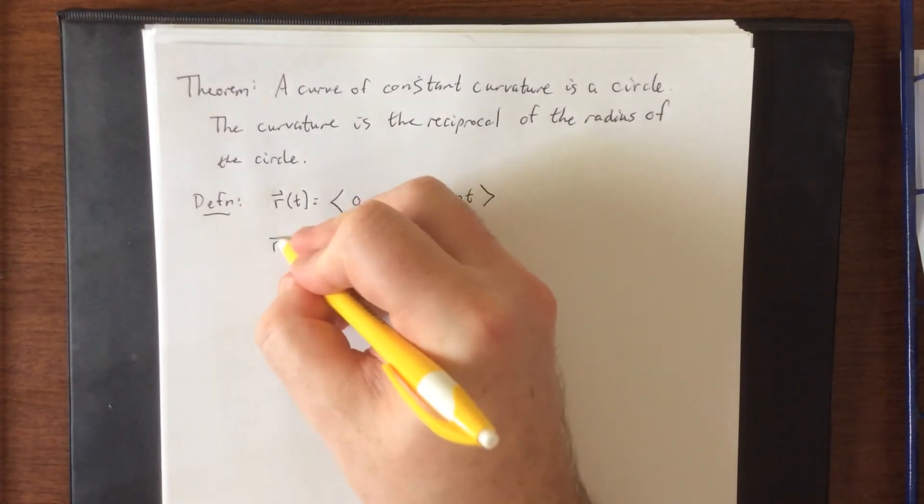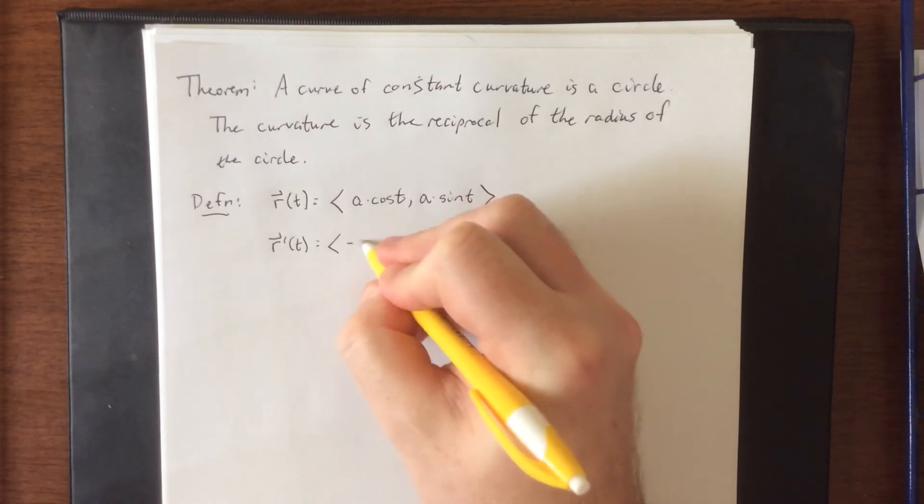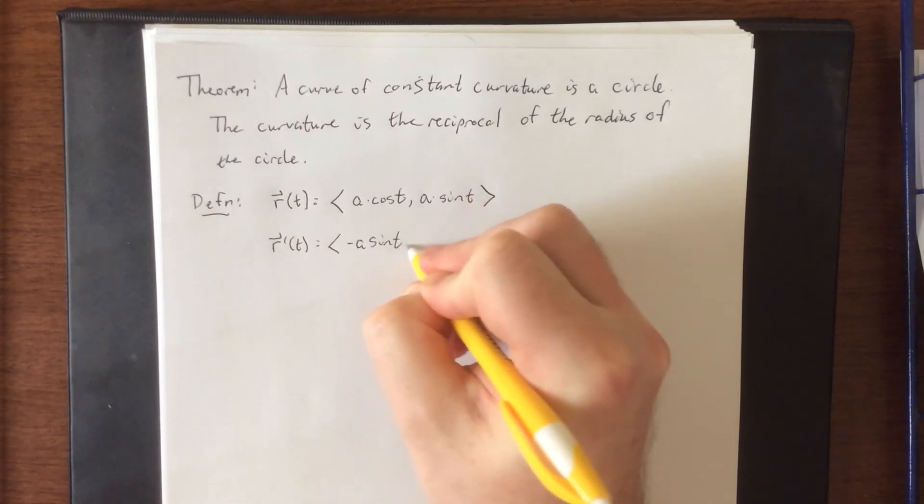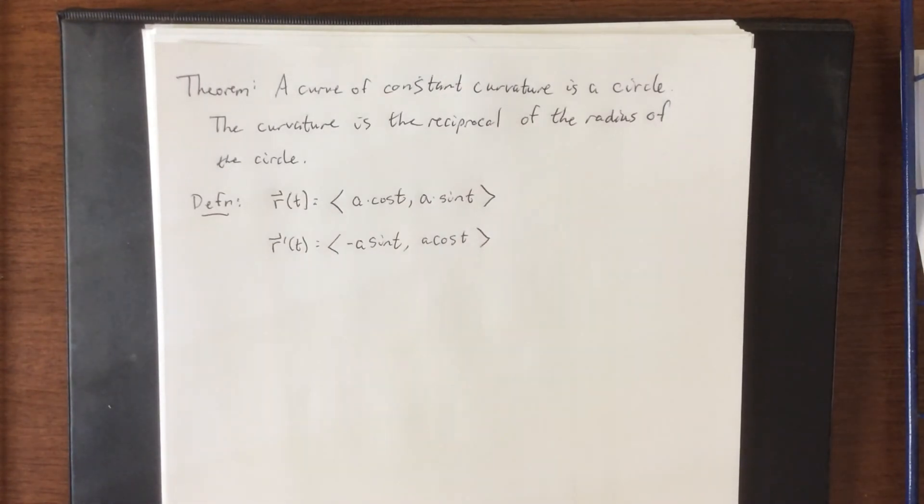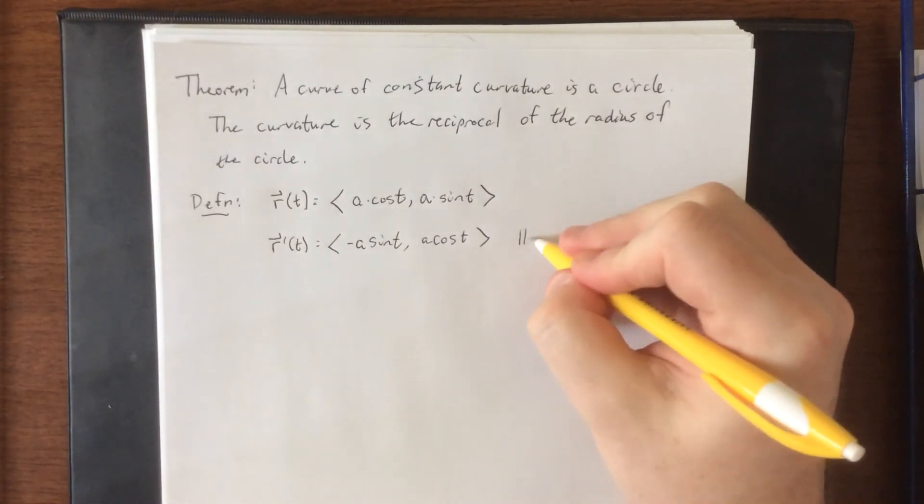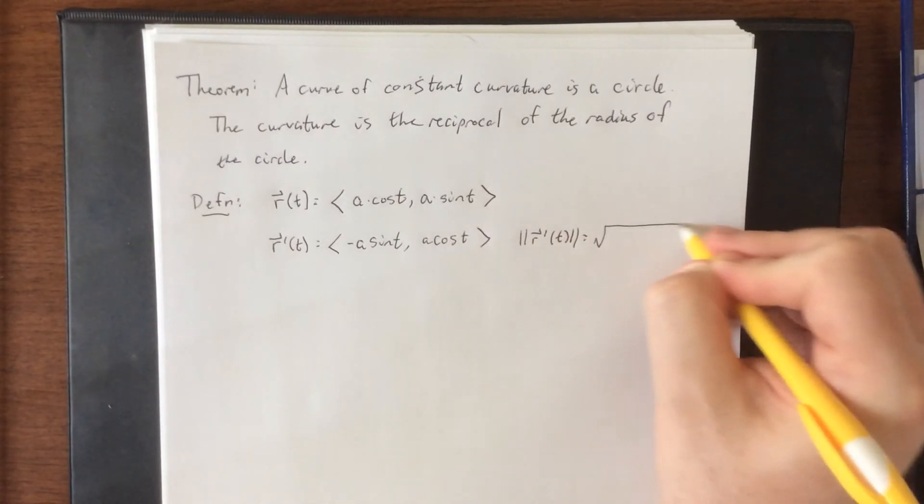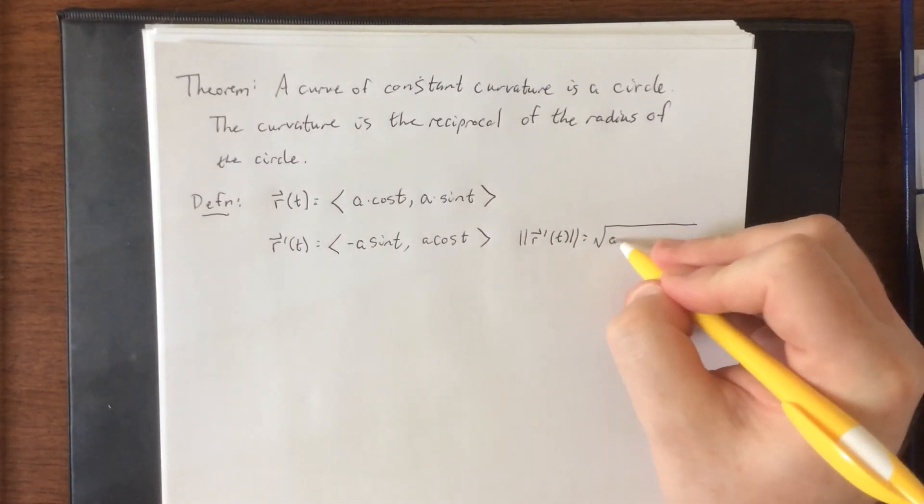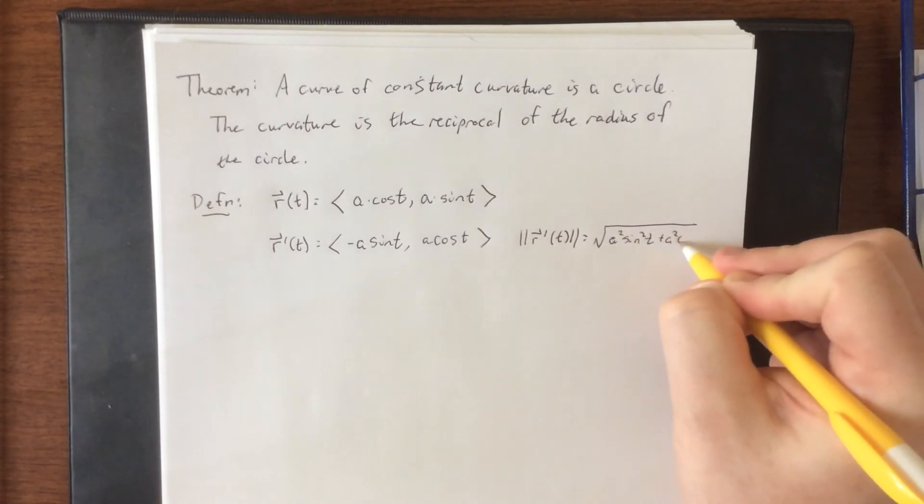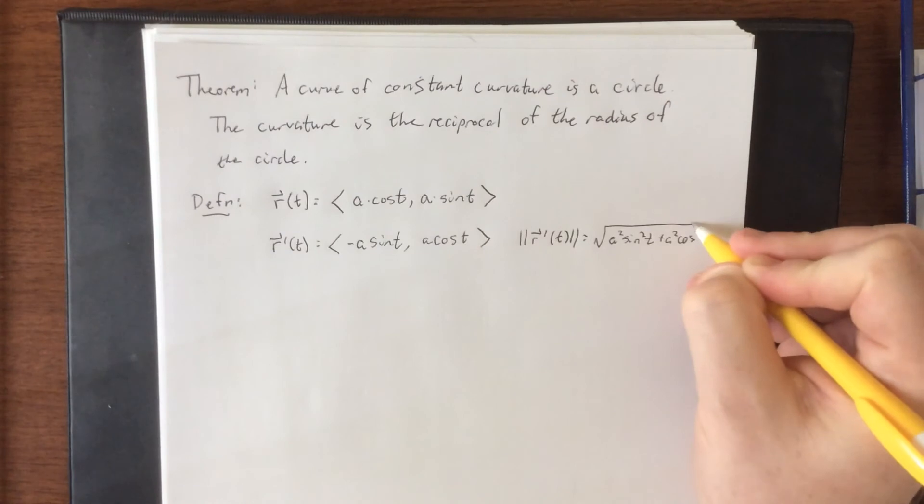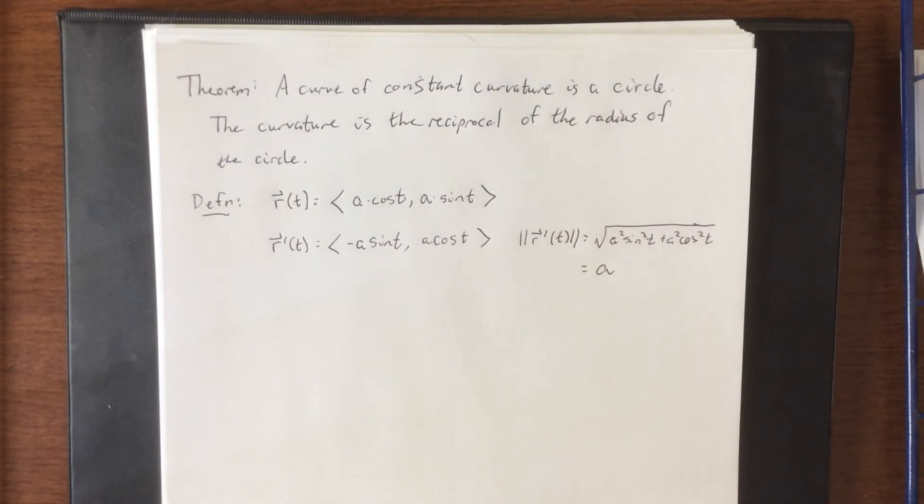The first thing I'm going to do is take a derivative. That will give me negative a sine t and a times the cosine of t. I'm going to need the magnitude of this vector as well. Through the use of a Pythagorean identity, we're going to get that this is a squared sine squared t plus a squared cosine squared t. Factoring out an a squared and applying a Pythagorean identity, we get that quantity is a.